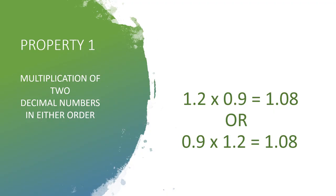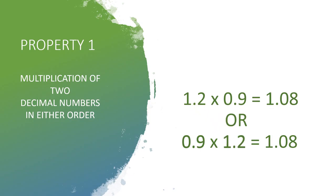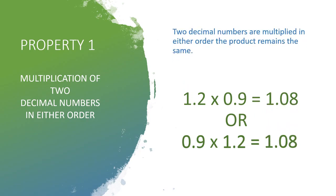If you change the order of decimal numbers, that means first we take 0.9 x 1.2. Do the multiplication and check the answer. The answer is 1.08. So what you observe? Two decimal numbers are multiplied in either order — the product remains the same.